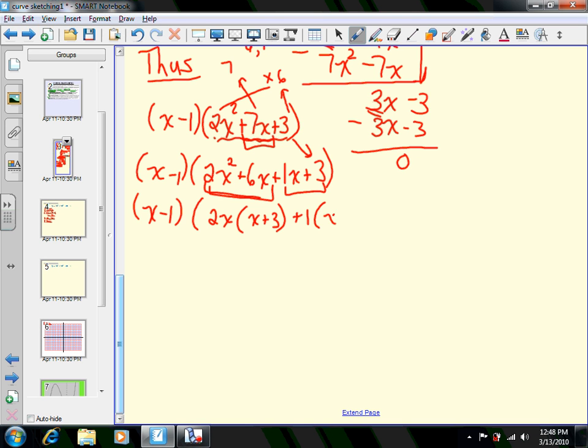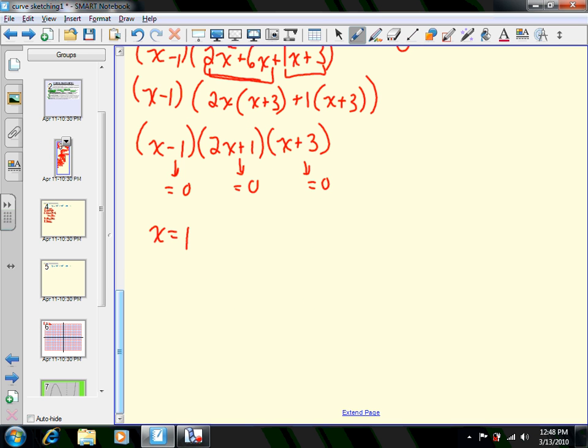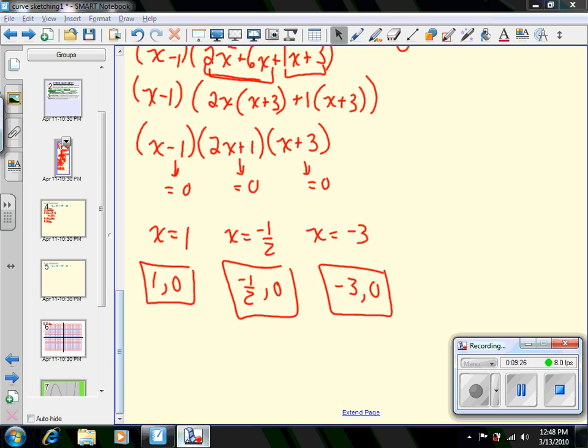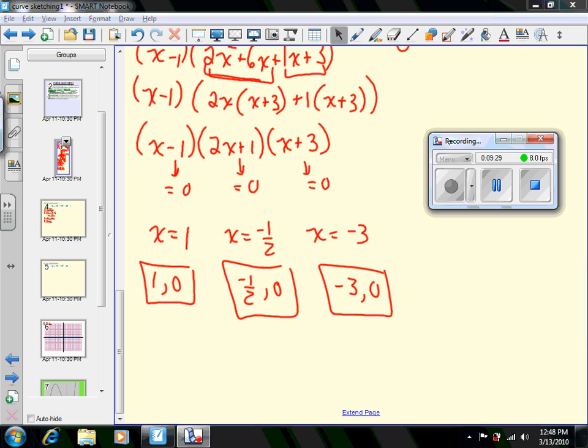2x² + 6x has a common factor of 2x, leaving (x + 3). There's a common factor of 1 on that, leaving (x + 3). So I could rewrite this as (x - 1)(2x + 1)(x + 3). These three factors set equal to zero give my three roots: x = 1, x = -1/2, and x = -3. So (1, 0), (-1/2, 0), and (-3, 0) are all three x-intercepts. I will stop this and start the next section on part two of the video.